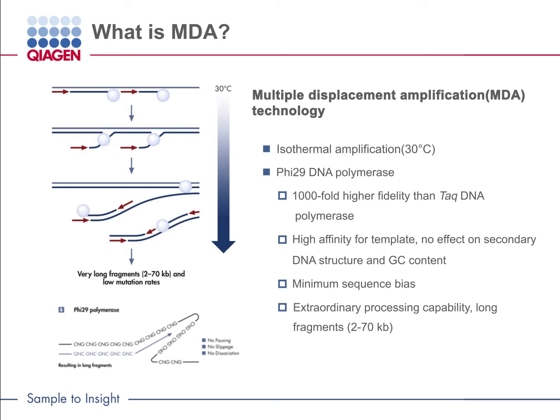Secondly, MDA uses Phi29 DNA polymerase that has three important properties. Compared to Taq DNA polymerase, which is normally used in PCR-based methods, Phi29 DNA polymerase has a thousand-fold higher fidelity, resulting in very low error rates. The Phi29 enzyme has very high affinity for the template, and this makes it suitable for use with a small amount of material.